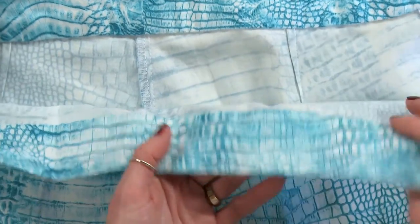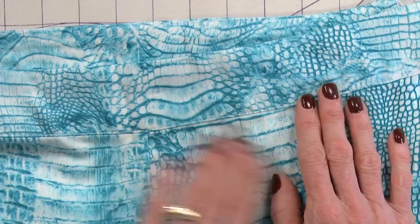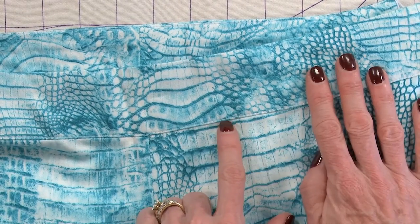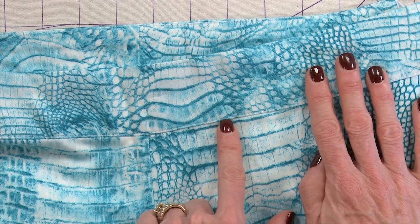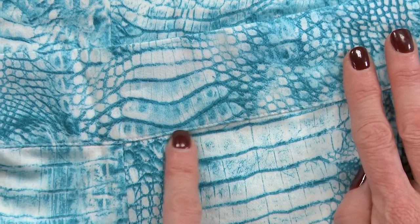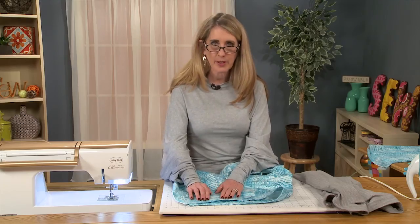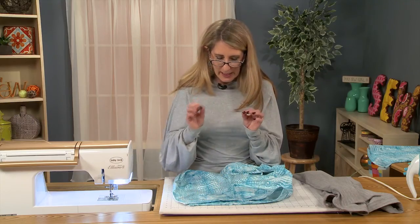Before I did that though, what I did with the top of my facing is I pressed it and then you can maybe see, I hope you can, that there's just a fine little stitching line here. I love to do edge stitching. I think that it gives a garment just a nice little extra touch.